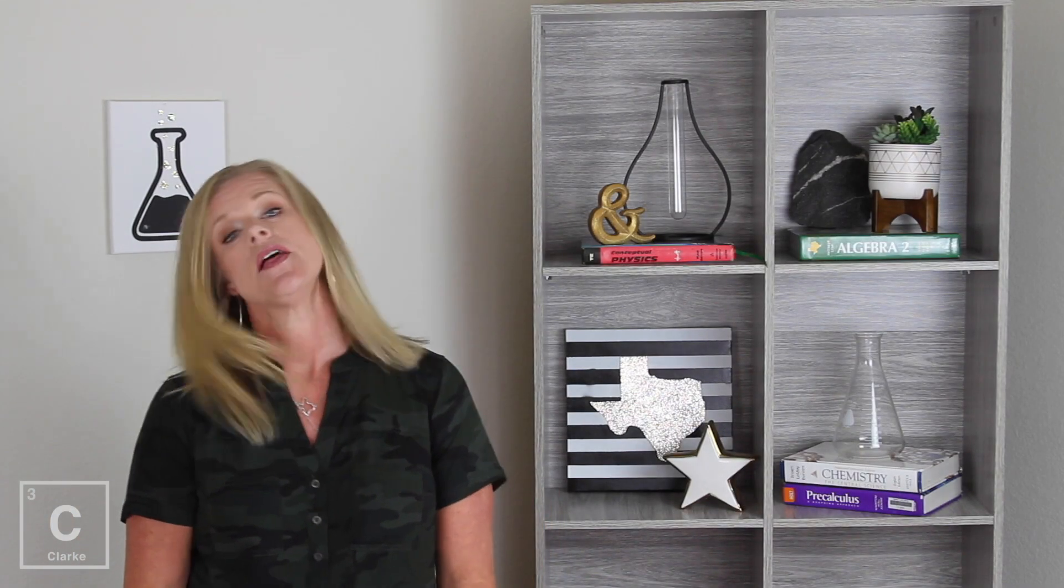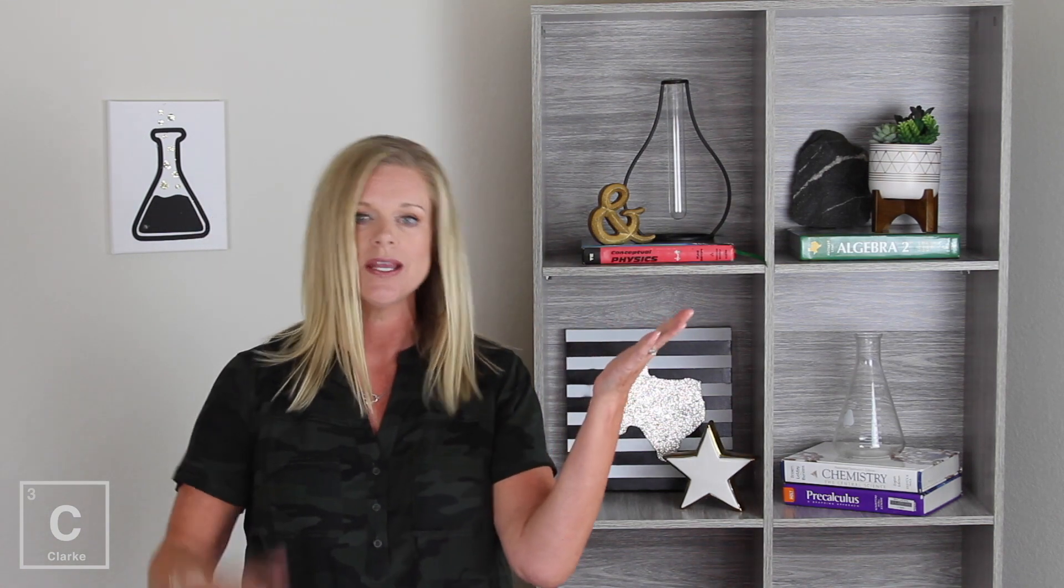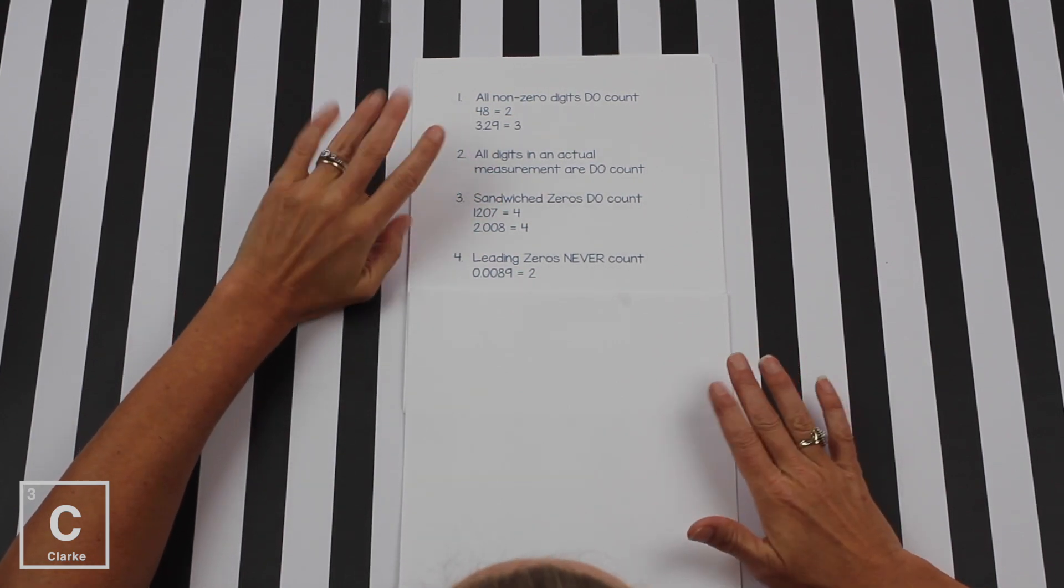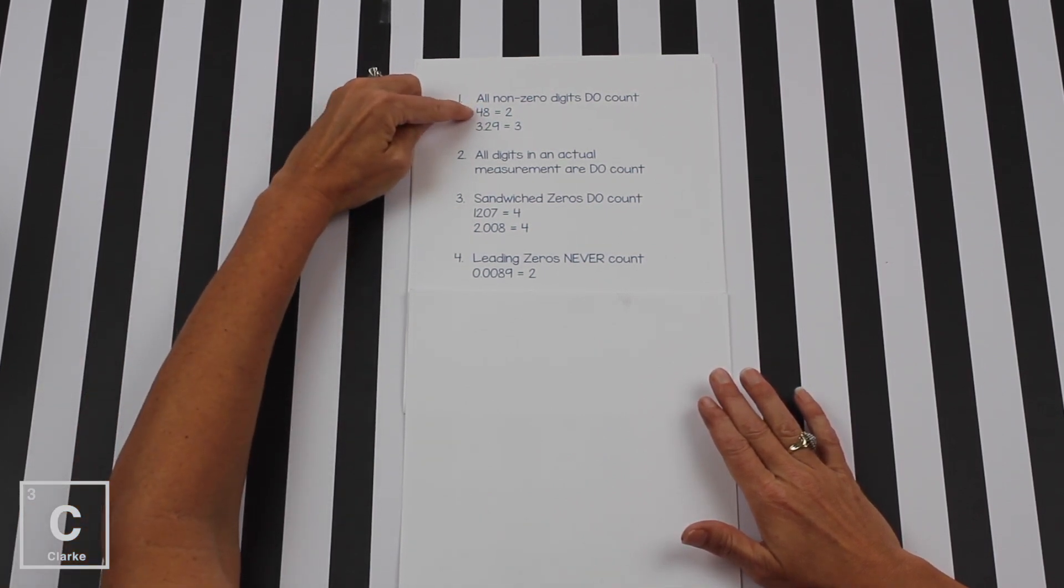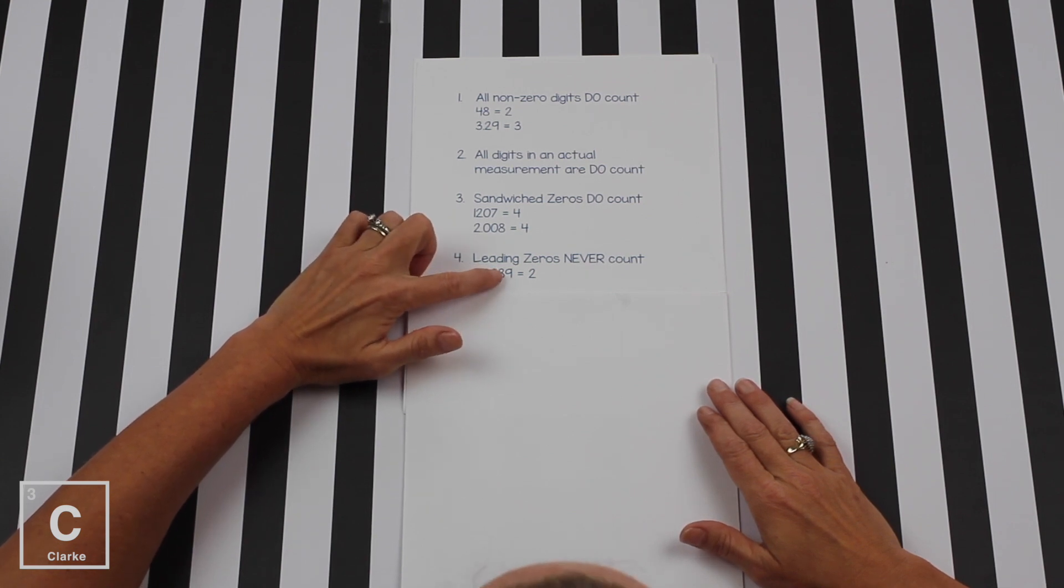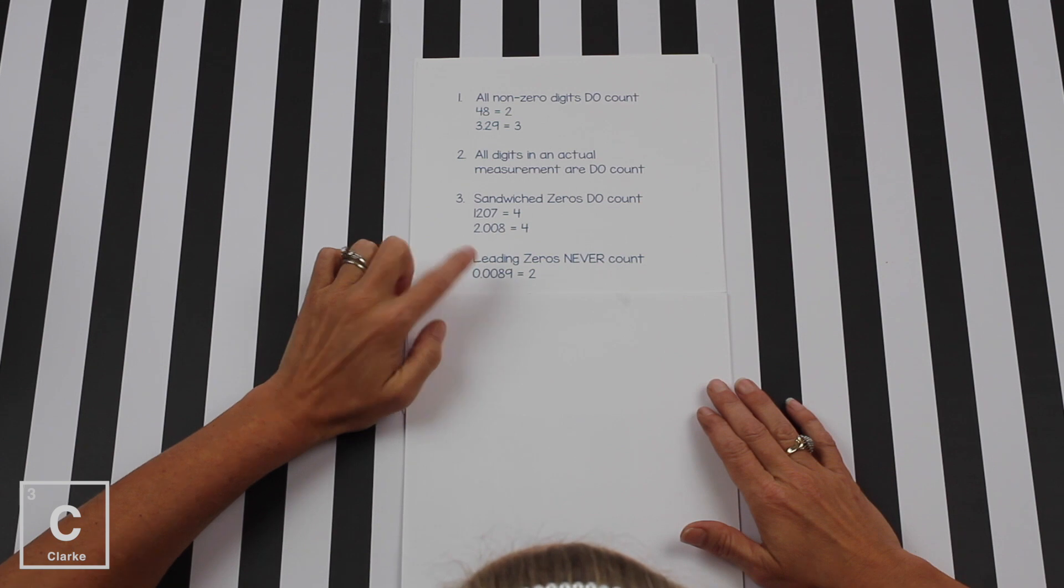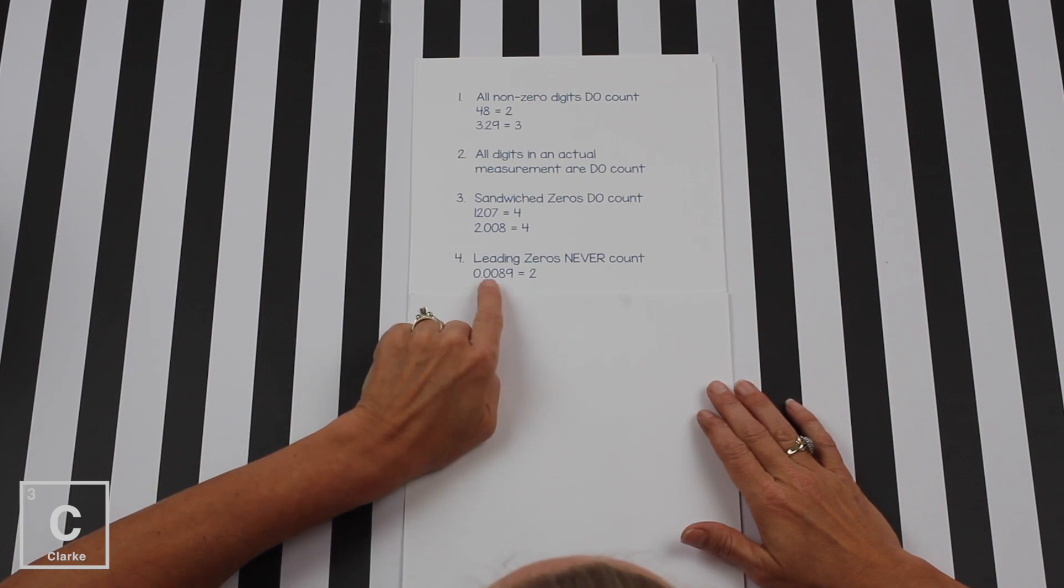Now these last two rules, these are probably the most important rules because they deal more specifically with the beginning zeros and the ending zeros. And that's where the confusion comes. So really focus here. The fourth rule, leading zeros never count. Now this rule really only pertains to decimal numbers because you wouldn't put a zero in front of a whole number like 48. Decimal numbers do have leading zeros. These zeros are called placeholders. Without these zeros here, that eight and nine would not be in the right place value. So these zeros are important. And we see that there is only two non-zero numbers, two SIGFIGS because leading zeros never count.